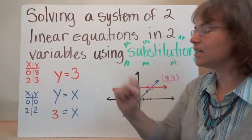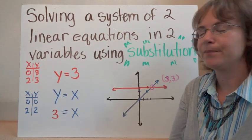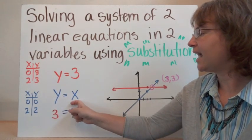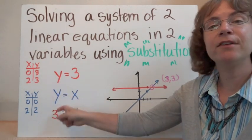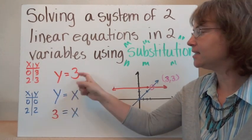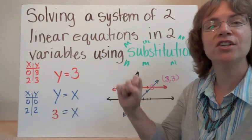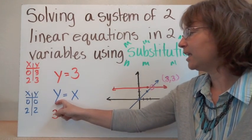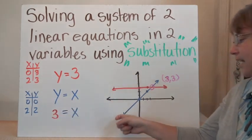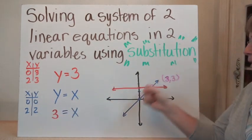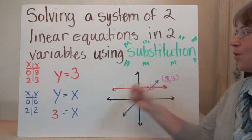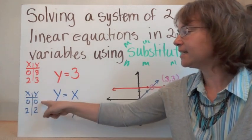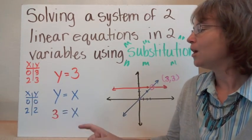We have y is equal to 3, and we also have y is equal to x. Both of these are lines. This is a horizontal line that goes along at 3, and this right here is a line where y is always equal to x — whatever x is, y is the same thing.